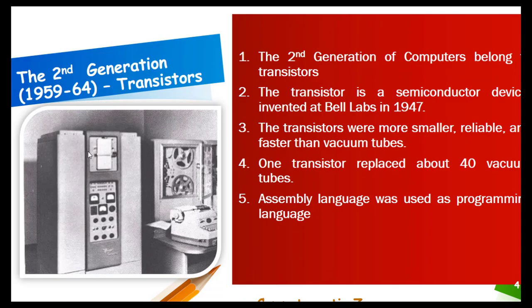The second generation of computers spans from 1959 to 1964 and is known as the transistor era. Transistors replaced vacuum tubes in this generation. A transistor is a semiconductor device that was invented at Bell Labs in 1947. Transistors were smaller, more reliable, and faster than vacuum tubes, and one transistor replaced about 40 vacuum tubes — a significant advancement.